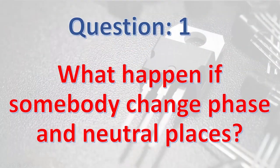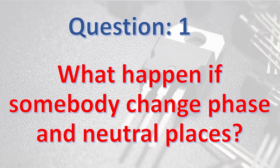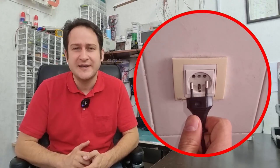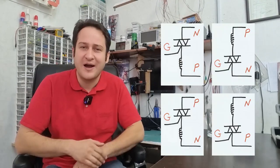Let's review six important questions about triacs. Question number one: What happens if somebody change phase and neutral places? Nothing. It will work properly. Somebody thinks that triacs can only switch phase wire, but it can switch either phase or neutral. So, don't worry about how user will connect plug into outlet. And also, it is no matter to change bulb and triac places. Therefore, all of these circuits will work fine.